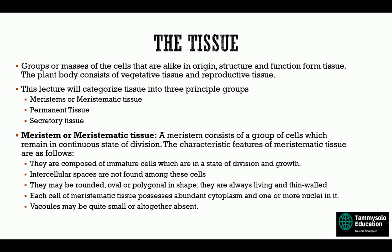The meristem or meristematic tissue consists of a group of cells which remain in a continuous state of division. The characteristic features are: they are composed of immature cells in a state of division and growth. These cells never grow old; they remain immature because they continually divide. Intercellular spaces are not found between them. They may be rounded, oval, or polygonal in shape, always living and thin-walled. Each cell possesses abundant cytoplasm and one or more nuclei. Vacuoles may be quite small or altogether absent.